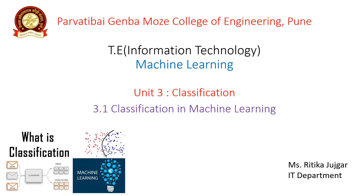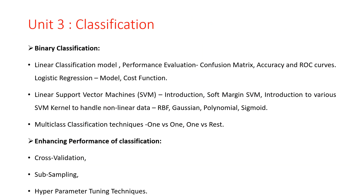The third unit is based on classification. In today's lecture, we discuss what is meant by classification and terminologies used in Machine Learning classification. In Unit 3, we discuss binary classification, linear classification model, and performance evaluation — including the confusion matrix, accuracy, ROC curves, logistic regression, model cost function, SVM, working of SVM, introduction, and soft margin SVM.